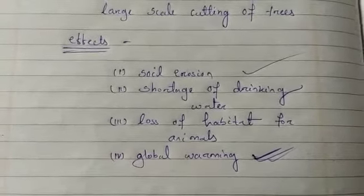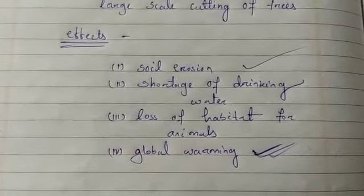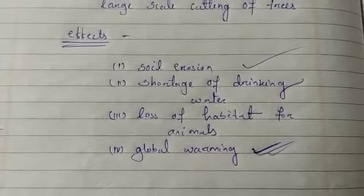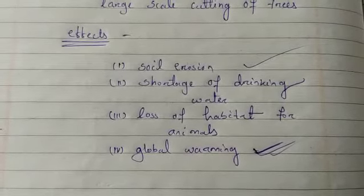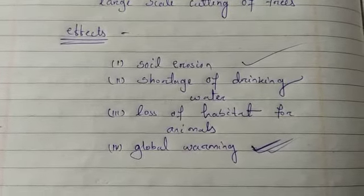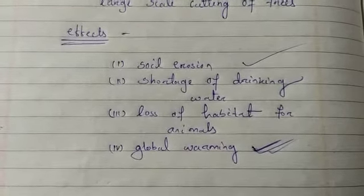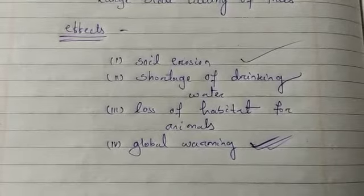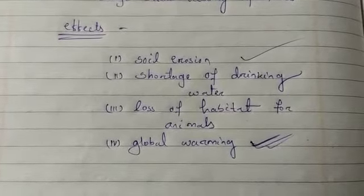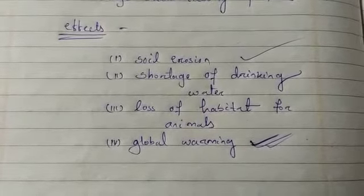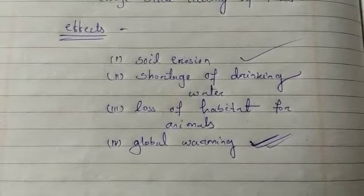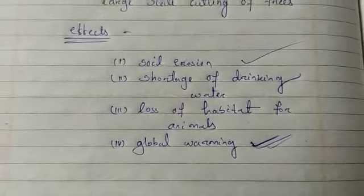The single oldest living thing on earth is a tree — it is 4,700 years old and is located in the United States. It was already growing when the Egyptians built the pyramids.